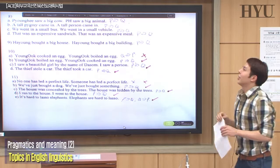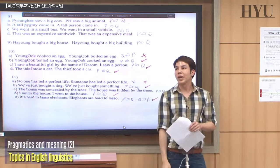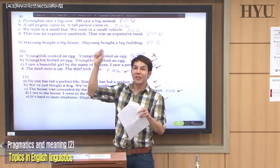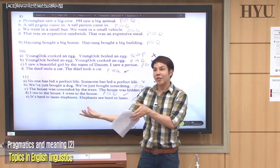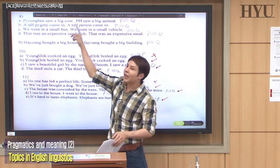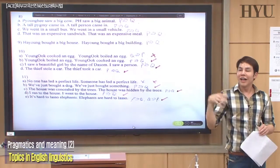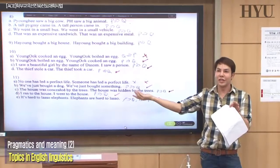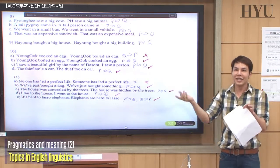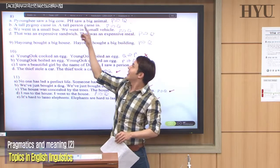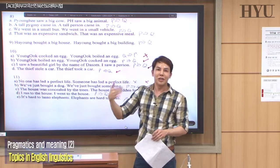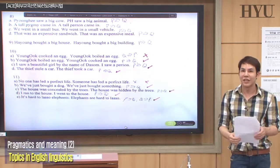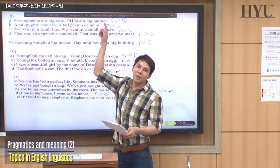If he saw a big cow, does it always mean that he saw a big animal? A whale or an elephant is a big animal, but if you compare a cow to a dinosaur, a cow is not a big animal. So 'Pyonghee saw a big animal' is not necessarily true — it depends on what you compare it to. A cow compared to a dinosaur is like an ant, so it's not necessarily a big animal.